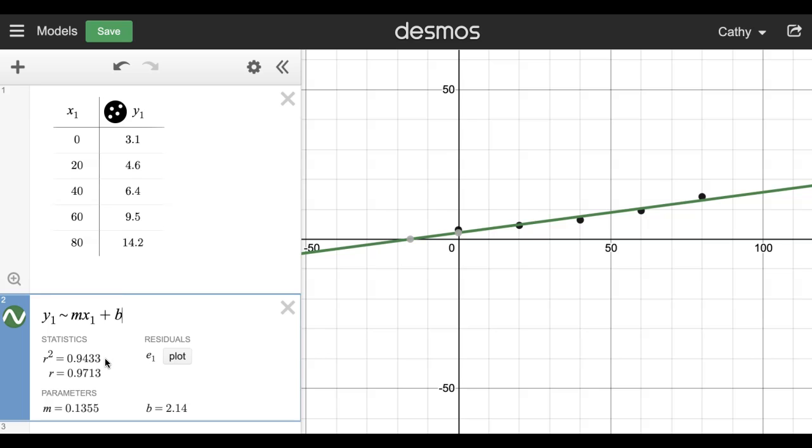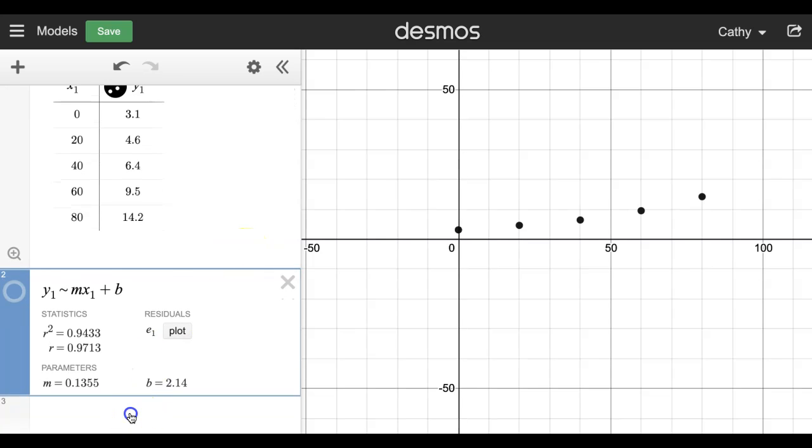But maybe it could be better if I chose a different model. So I also notice that this looks like it is starting to increase more rapidly as time goes. So maybe it's a curve, and you know that exponential models sometimes fit population growth. So let's try an exponential model for this, and to do that it's the same basic procedure.